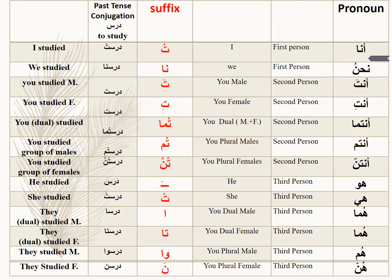How do we conjugate ana? By adding the suffix ta-dhamme to the verb. Here I have an example using the verb 'to study': Ana daras-tu. You suffix ta-dhamme. For nahnu, the second pronoun: daras-na. You suffix noon and alif. Leave the verb as it is — don't change the verb, just add the suffix.